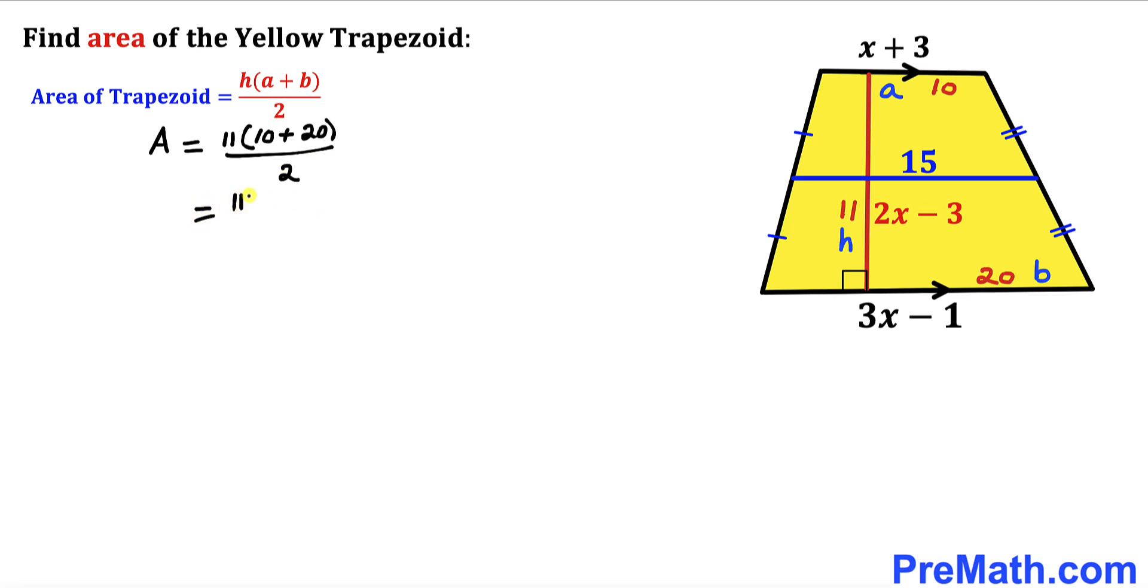So that's going to give us 11 times 30 divided by 2 which is same as 11 times 30 divided by 2 is 15. So therefore the area of this yellow trapezoid turns out to be 165 square units.